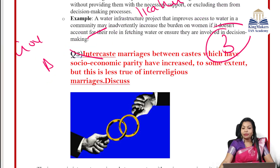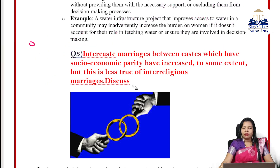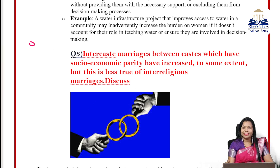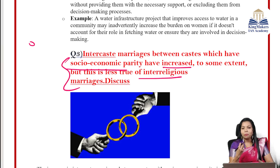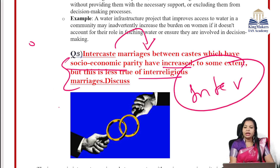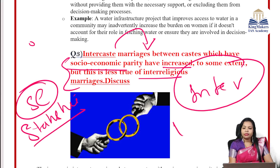Next question: Inter-caste marriages between castes have shown socio-economic parity has increased to some extent, but this is less true for inter-religious marriages. Understand the question — UPSC is saying that inter-caste marriages are somewhat normalized now, but inter-religious marriages are still very rare. For introduction, you can use statistics or a Supreme Court judgment. You can cite the Hadiyah case — initially seen as a 'love jihad' issue — but the Supreme Court later upheld that the right to marry is part of Article 21 once individuals are of legal age.